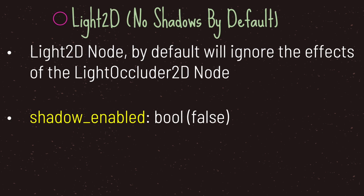By default, Light2D does not cast a shadow even when you provide a LightOccluder2D node onto your game scene. This is because the Light2D has a property called shadow enabled, and by default this is set to false. In order to cast shadows onto your game scene you need to change the value of shadow enabled to true.